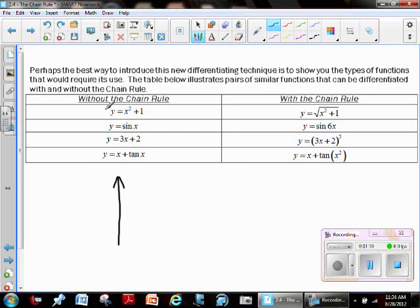A list of things that one could take a derivative of very, very simply without the use of the chain rule. Things like y equals x squared plus 1, y equals the sine of x, y equals 3x plus 2, y equals x plus tangent of x. Let's take a look at each one of these. They're very simple, straightforward derivatives where you would apply one of the basic rules that we've already talked about.